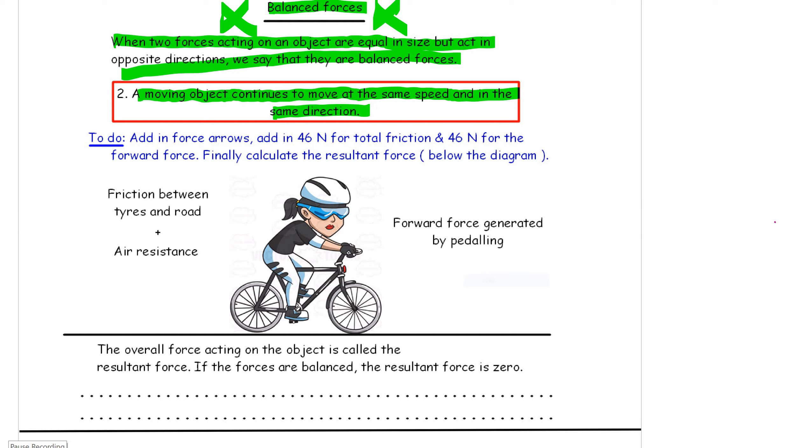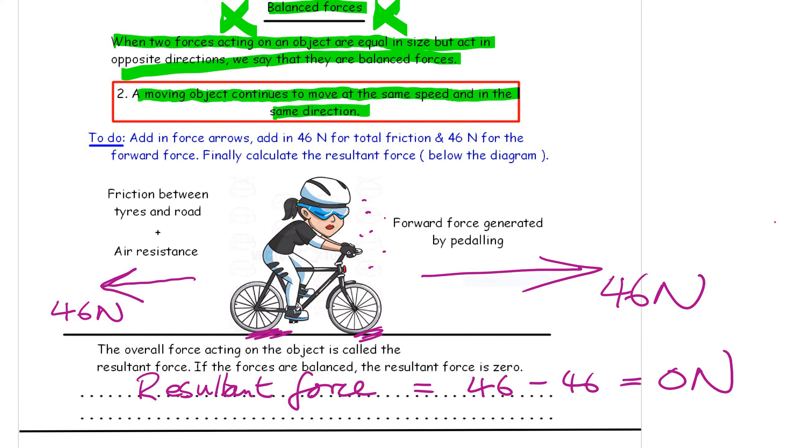Let us have a look at this final example. Add in force arrows. Add in 46 newtons for the total friction. The total friction is designed to slow the bike down. That will be air resistance and friction between the tires and the road. And, of course, air resistance as she crashes through billions of air particles. And then she is pedaling forward with a force of 46 newtons. The overall force acting on the object is called the resultant force. If the forces are balanced, the resultant force is going to be one take away the other one, which equals 0 newtons. The forces are balanced.